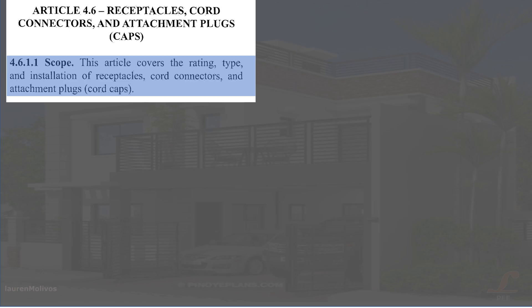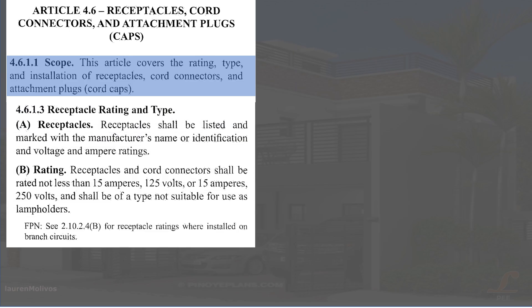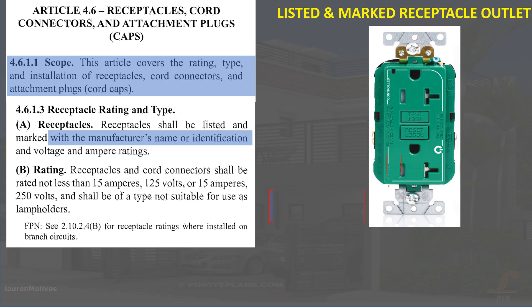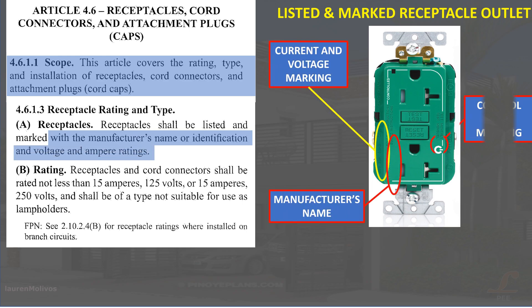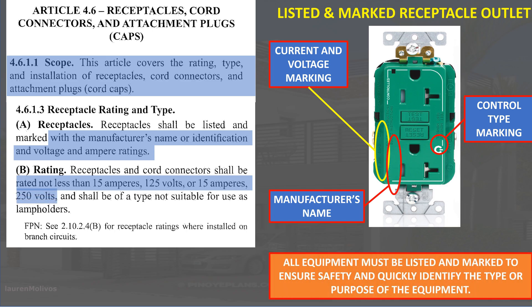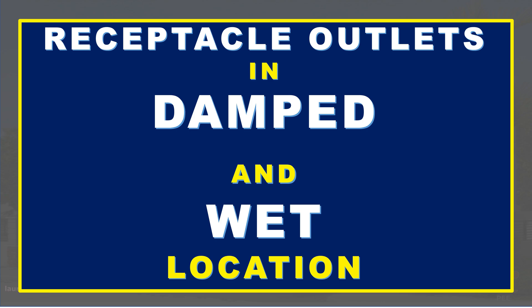Under Article 4.6, Section 4.6.1.3, receptacles shall be listed and marked with the manufacturer's name or identification, and voltage and ampere ratings. The rating of receptacle outlets shall be rated not less than 15 amperes 125 volts or 15 amperes 250 volts. All equipment must be listed and marked to ensure safety and quickly identify the type or purpose of the equipment.